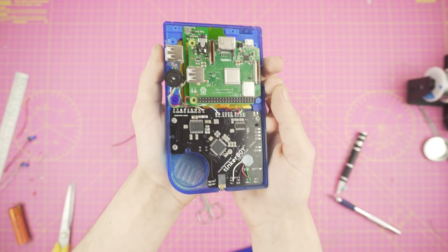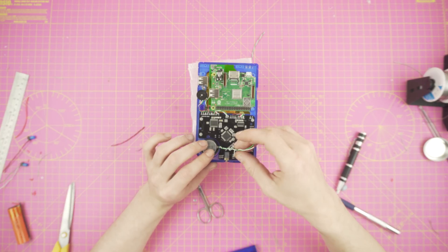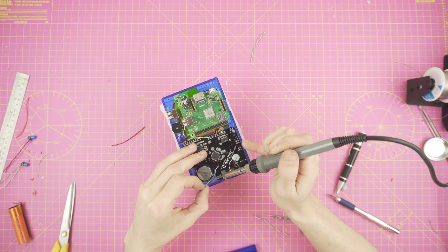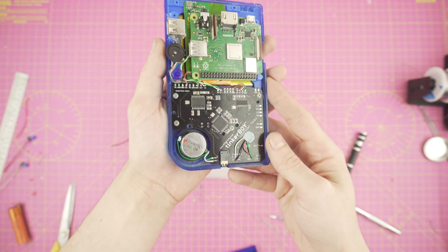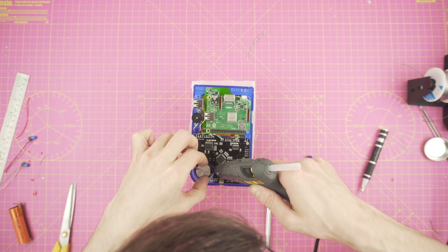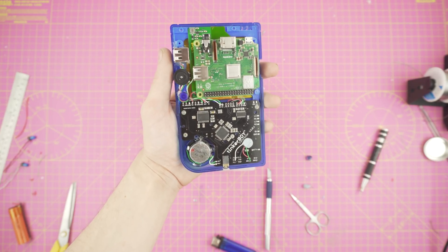The only thing that is missing is our speaker. Pop that in, solder the green to the plus and white to the minus pins. Hold the speaker with some hot glue and now we are actually done.